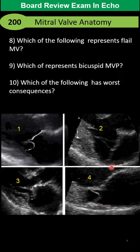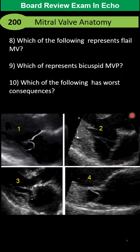Which of them represents mitral valve flyer? Second, which of them represents bicuspid mitral valve prolapse? And finally, which of them has the most consequence and significant clinical impression?